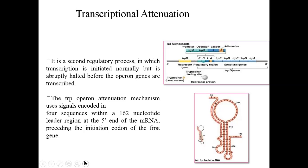The second regulatory mechanism is tryptophan attenuation. The attenuator site is located just downstream of the tryptophan operator site and is known as the leader sequence. The attenuator sequence is located inside the leader sequence, and it is the main regulatory mechanism controlling tryptophan biosynthetic gene expression. The tryptophan operon attenuation mechanism uses a signal encoded in four sequences within a 162-nucleotide leader region at the 5' end of the mRNA, preceding the initiation of the first gene. The tryptophan leader mRNA has a super-secondary structure that can form stem-and-loop structures for regulation.